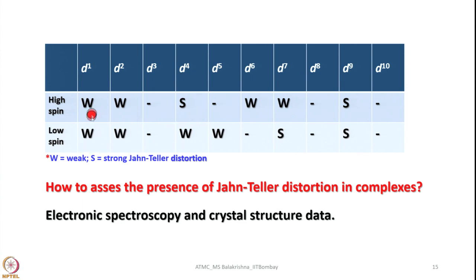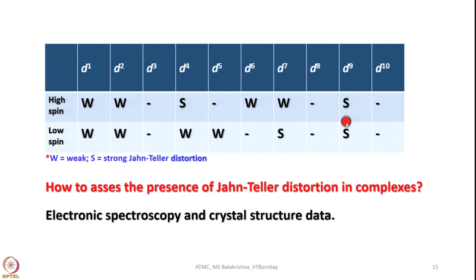In case of low spin, whether you take d1, d2, d4, or d5, in all these cases we come across weak Jahn-Teller distortion, whereas for d3, d6, d8, and d10 we do not see it at all. Only in case of d7 and d9 do we come across Jahn-Teller distortion in low spin complexes. For d9, irrespective of low spin or high spin, it is going to show strong Jahn-Teller distortions. Theoretically, by looking into the eg electronic configuration and to an extent the t2g configuration, we can predict the possibility of a complex showing Jahn-Teller distortion.